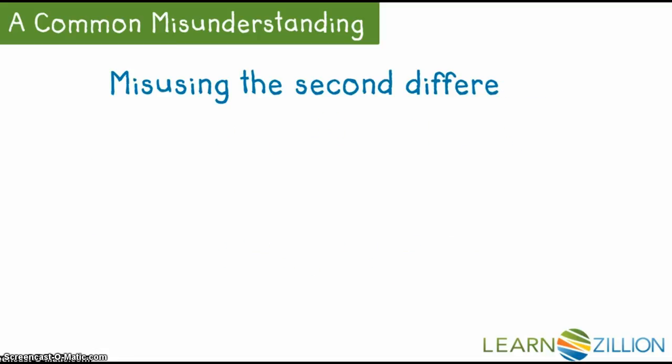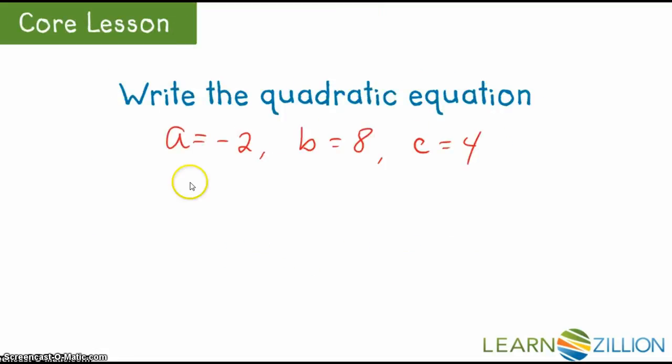Going back to see what they got, a is equal to negative 2. So if you take your second difference and get negative 4, you can divide that by 2 to get your a value.